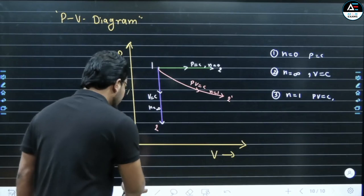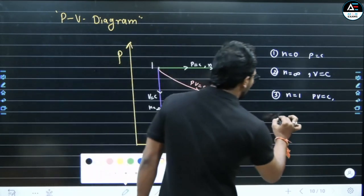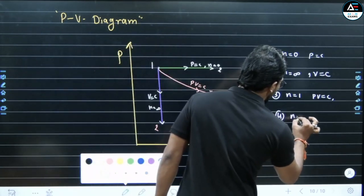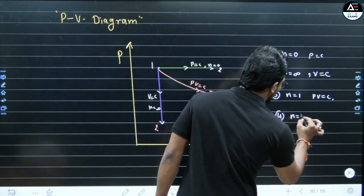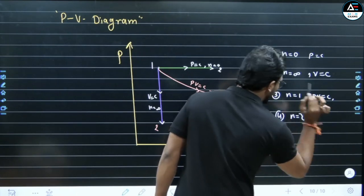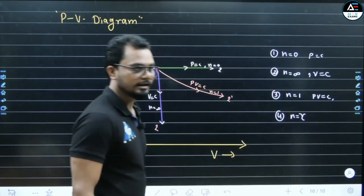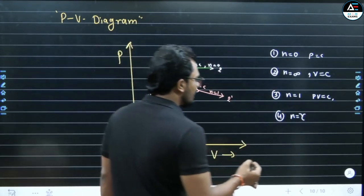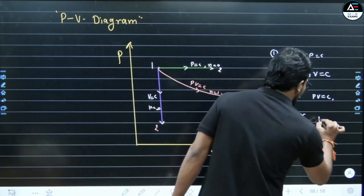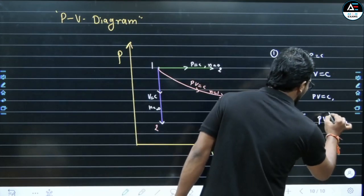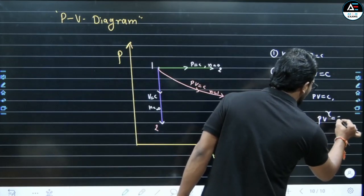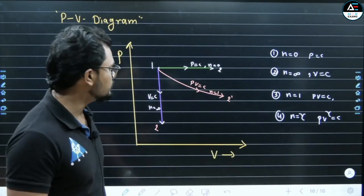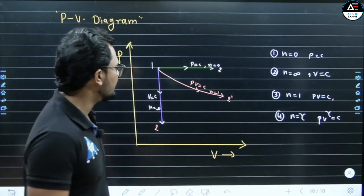Next, point number 4: we put N = gamma. Then we get PV raised to power gamma = constant — reversible adiabatic process. This also gives a curve on the PV diagram. As N increases from zero to infinity, a clockwise rotation occurs in the curves.